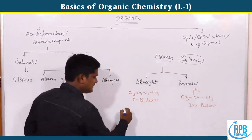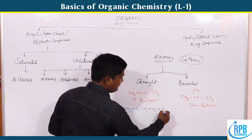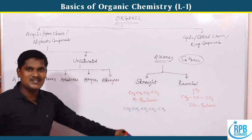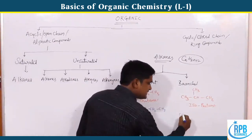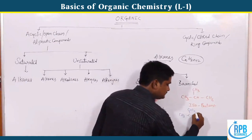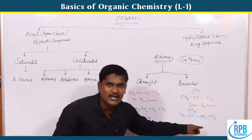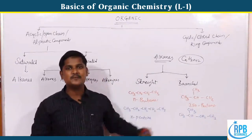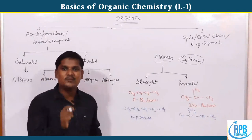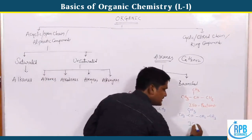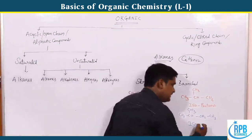For branched chain compounds, if a methyl group is at the second position of a four-carbon chain, it is called isobutane. For a five-carbon compound, if a methyl group is at the second position the straight chain has only four carbons but the fifth is a branch — it is called isopentane.